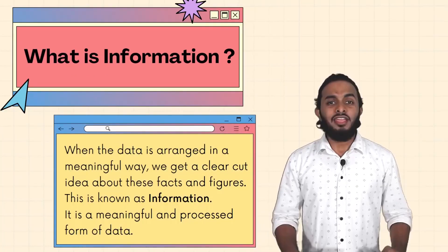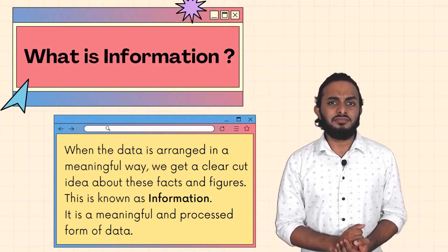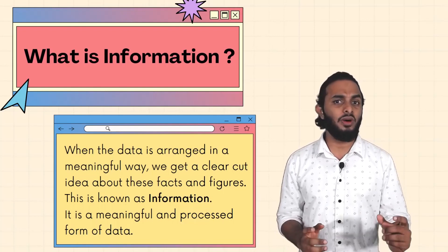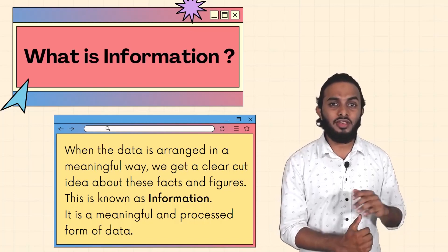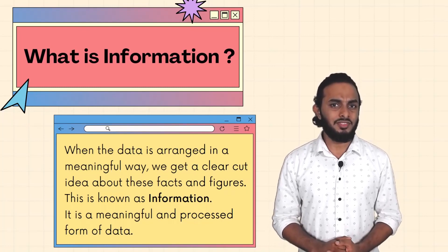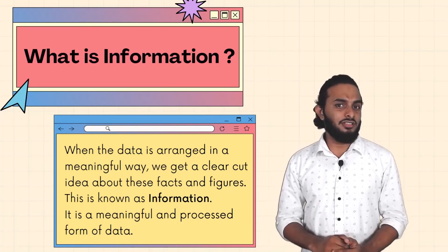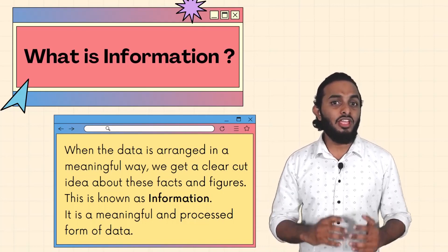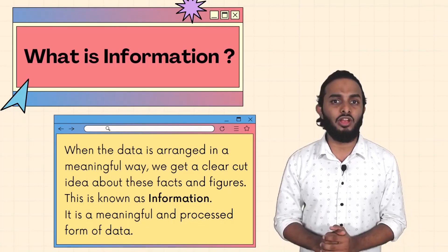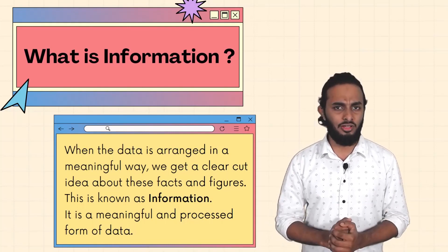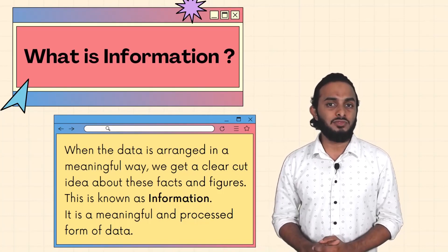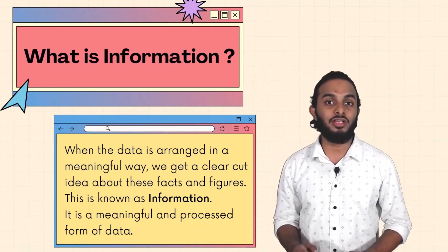Information is different from data. If we arrange the data, we get information. For example, in the English alphabet there are letters. Letters are switched into a few words, and these words have separate meanings. If combined into a complete meaning, the words have changed into a sentence. So in short, information is the collection of data, or: raw facts are called data and meaningful facts are called information.